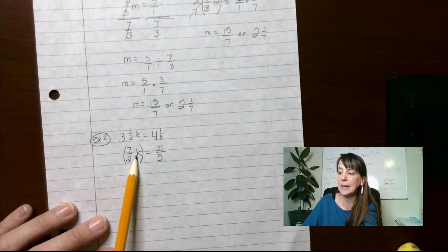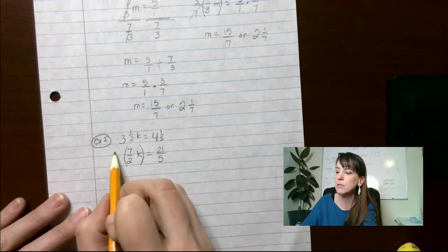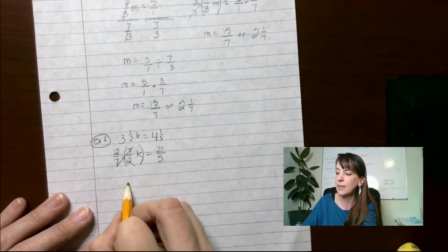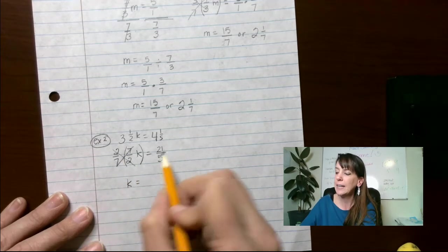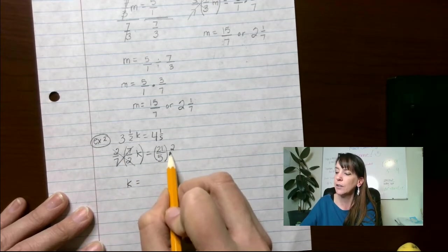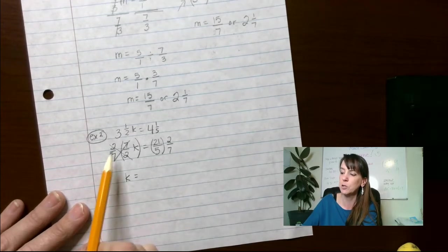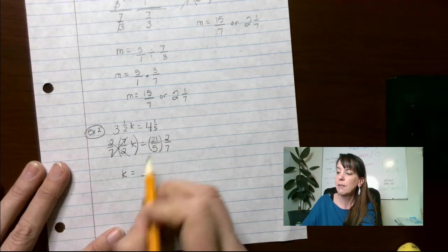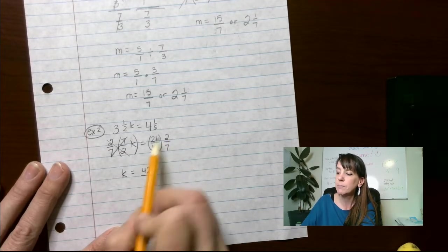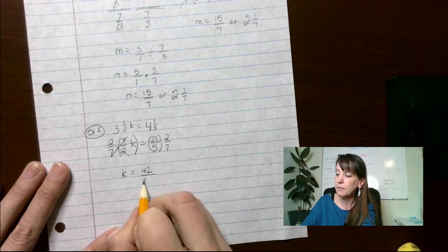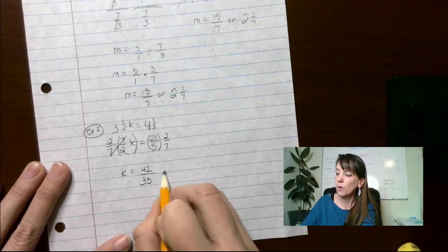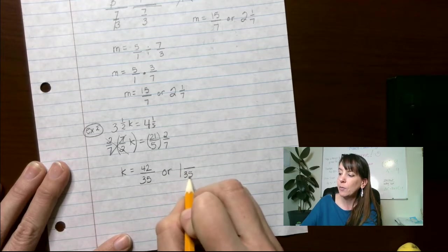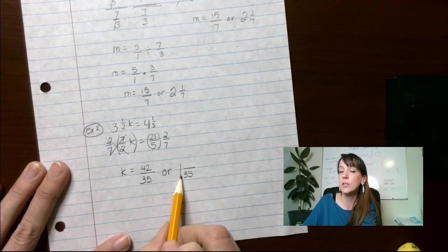We're multiplying seven-halves by k, and the opposite of multiply is divide, but we never divide fractions. We multiply by the reciprocal. This cancels out this, this cancels out that, and I get k all by itself. But what I do to one side, I must do to the other. Two over seven. Multiply it by two over seven here. Multiply it by two over seven here. Multiply straight across the top, I get forty-two, because twenty-one times two. Five times seven is thirty-five. Or thirty-five goes into forty-two one time, with a remainder of thirty-five times one is thirty-five.